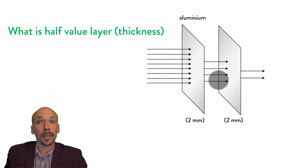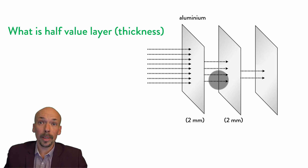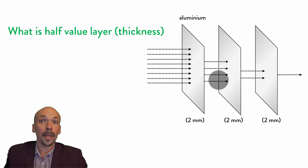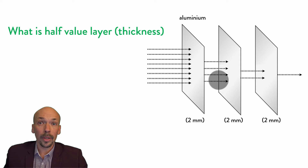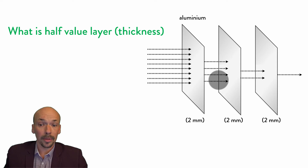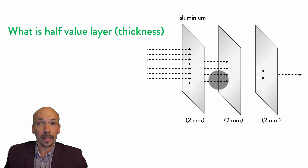If we have another aluminium sheet of 2 mm, then again half of it will be absorbed and half of it will penetrate. So the half value layer or the half value thickness of this kind of radiation is 2 mm of aluminium.